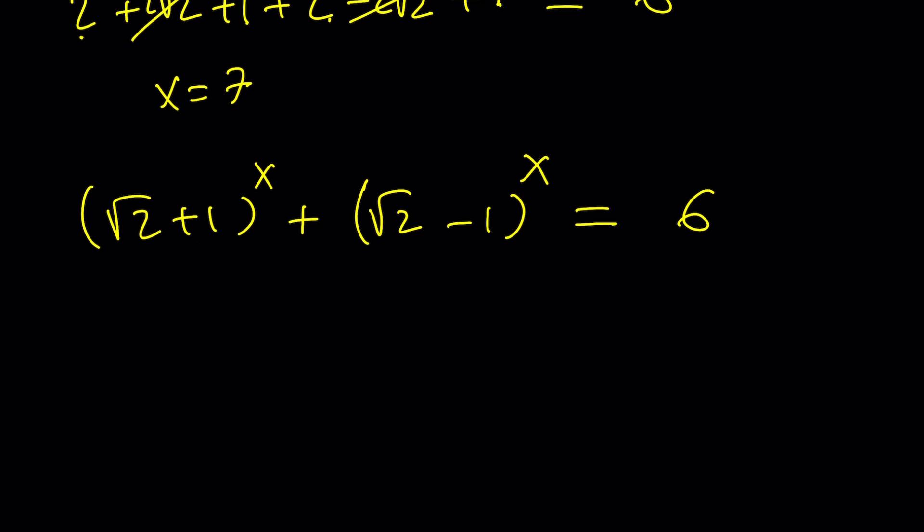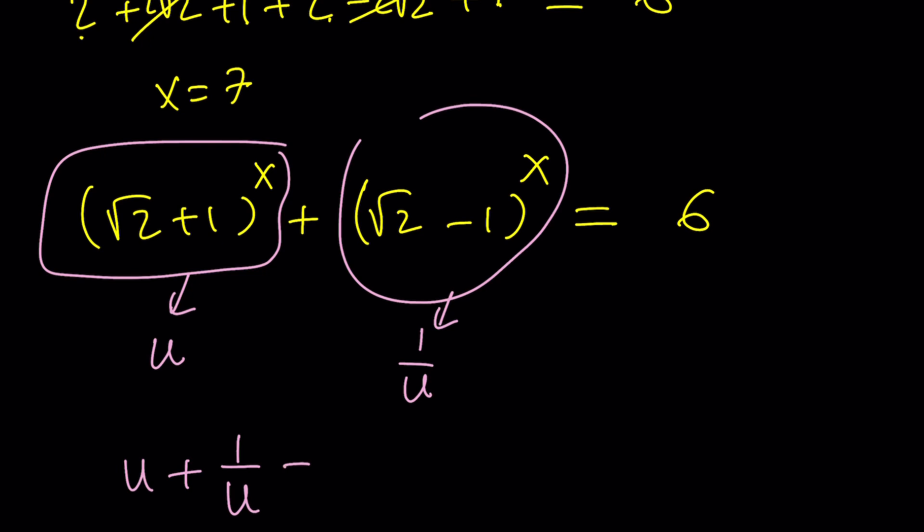I'm going to call this T. You know what? Let's call this T instead. Oops. That's not a good color. Too close. So let's call this T. Or maybe U. How about that? This will become 1 over U, right? So we get U plus 1 over U equals 6. Beautiful.